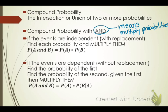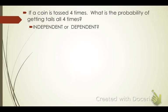If the events are dependent — that means you did not have replacement — then you're going to find the probability of the first, find the probability of the second given that the first has occurred, and then multiply them. We're going to use some examples so this will make more sense.